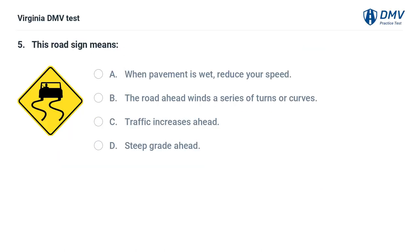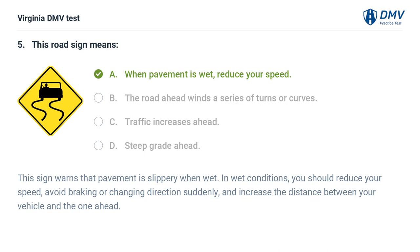This road sign means: A. When pavement is wet, reduce your speed, B. The road ahead winds a series of turns or curves, C. Traffic increases ahead, D. Steep grade ahead. The correct answer is A: When pavement is wet, reduce your speed. This sign warns that pavement is slippery when wet. In wet conditions, you should reduce your speed, avoid braking or changing direction suddenly, and increase the distance between your vehicle and the one ahead.